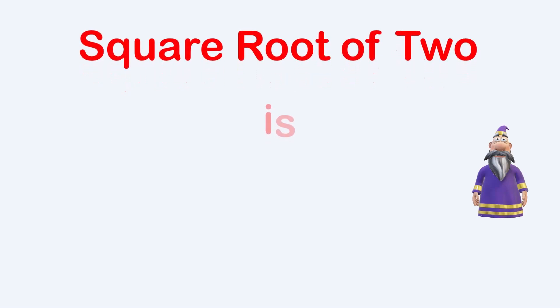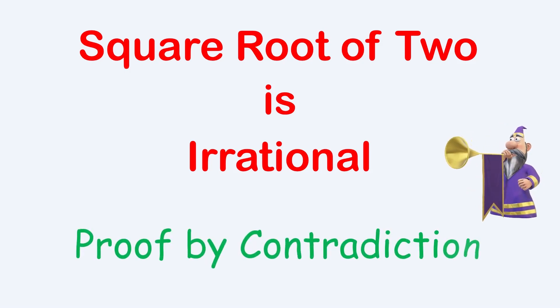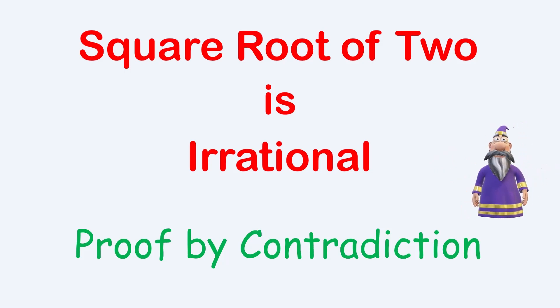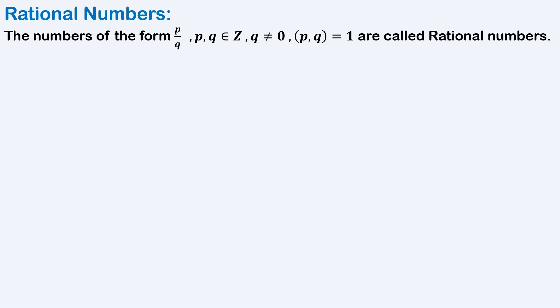The square root of 2 is irrational — that's what we are going to prove in this video, and we shall give its proof by contradiction. Before that, let's see what rational and irrational numbers are. The numbers of the form p over q, where p and q are integers, q cannot be 0, and the greatest common divisor of p and q is 1, are called rational numbers. Do remember this condition: the greatest common divisor of p and q must be 1.